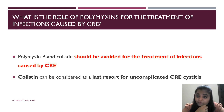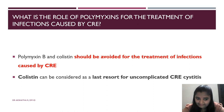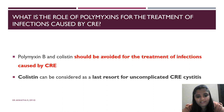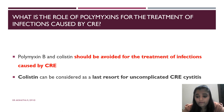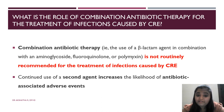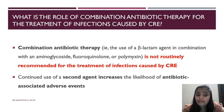Regarding polymyxins for CRE: both polymyxin B and colistin should be avoided. If absolutely necessary, colistin can be given for uncomplicated CRE cystitis. Polymyxins are avoided because they cannot achieve adequate blood concentration for sufficient action, and the sensitive breakpoint for polymyxins has been removed. Combination therapy with beta-lactam plus aminoglycoside, fluoroquinolone, or polymyxin is not routinely recommended, as the addition of a second drug increases the likelihood of antibiotic-associated adverse effects.